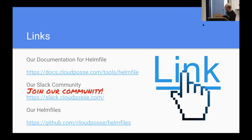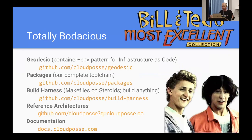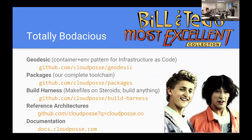Check out our documentation at docs.cloudposse.com — we talk about how to use Helmfile, and our own documentation is better than Helmfile's itself. By the way, we have no affiliation with Helmfile; I'm just a big fan. We have a very active Slack community for people who embrace this form of DevOps — I encourage you to join and check out our Helmfiles. Our entire toolchain is distributed in a Docker repo called Packages — mostly open source apps written in Go. We have Geodesic, our base image with all the tools like Terraform, KOPS, Helm, and Helmfile — the fastest way to get started. All our reference architectures are available on our GitHub.